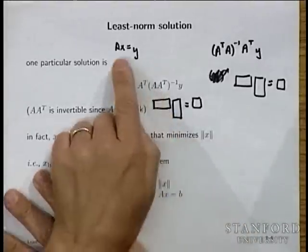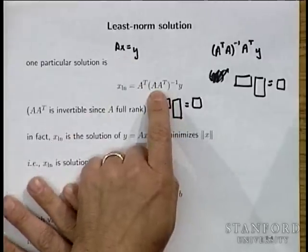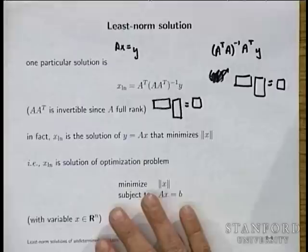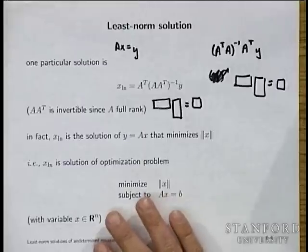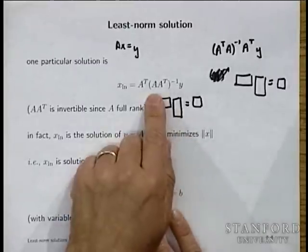This relies on the fact that if A is fat and full rank, A A transpose is invertible — a basic fact that you could show easily using QR factorization. So this is the least norm solution.